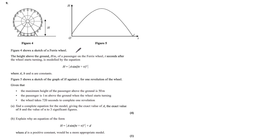Figure 5 shows a sketch of the graph h against t for one revolution of the wheel. Given that the maximum height of a passenger above the ground is 50 metres, the passenger is one metre above the ground when the wheel starts turning, and the wheel takes 720 seconds to complete one revolution, find a complete equation for the model, giving the exact value of a, the exact value of b, and the value of alpha to three significant figures.